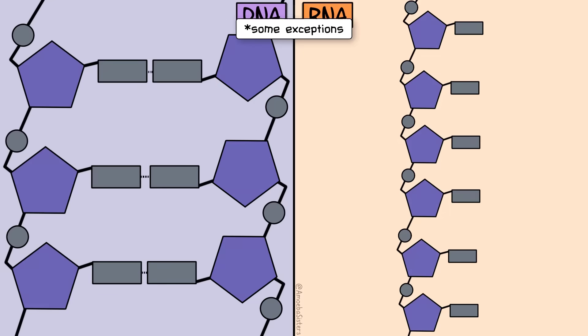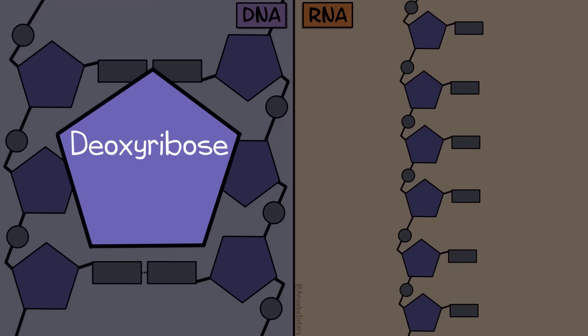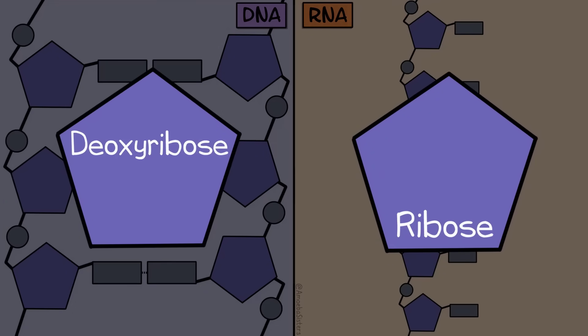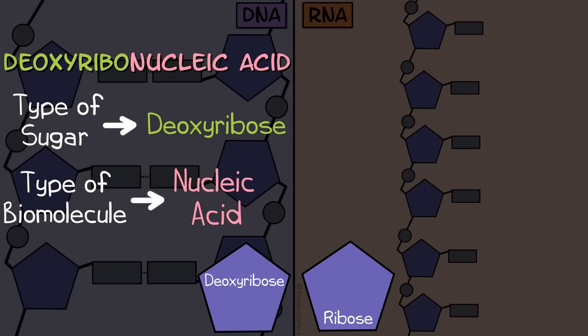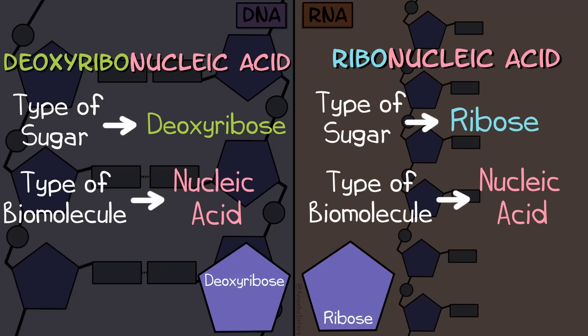The sugar in DNA is deoxyribose, and the sugar in RNA is ribose. This makes sense because DNA stands for deoxyribonucleic acid. That's helpful to know because the deoxyribose is a sugar, and nucleic acid is that type of biomolecule it is. RNA stands for ribonucleic acid, as its sugar is ribose.